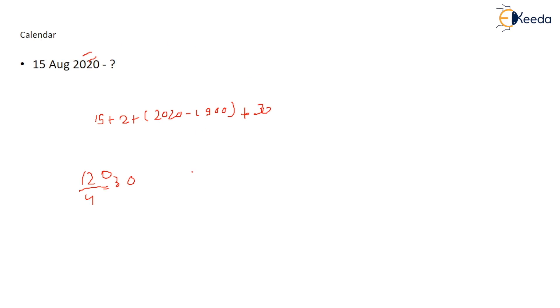So after doing this, 17 plus 120 plus 30, this comes out to be 167 divided by 7. So 14, 27, 21, 0, 6. 0, 6 is code for what? It's for Saturday. You can check it by your own whether the answer is correct or not. So the day is Saturday.